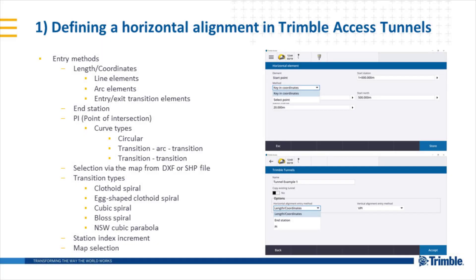When defining a horizontal alignment in Trimble Axis Tunnels, there are a variety of entry methods such as length, coordinates, which provides line, arc, entry and exit transition elements, also end station, and point and PI or point of intersection, which has various curve types such as circular, transition, and transition-transition.